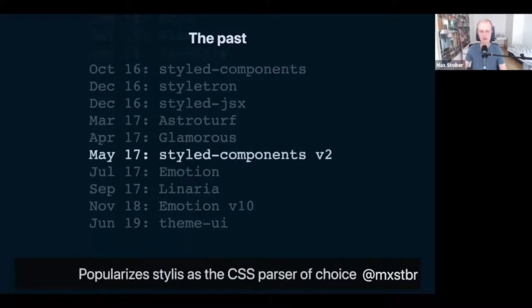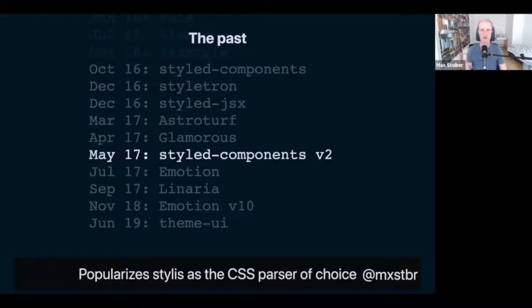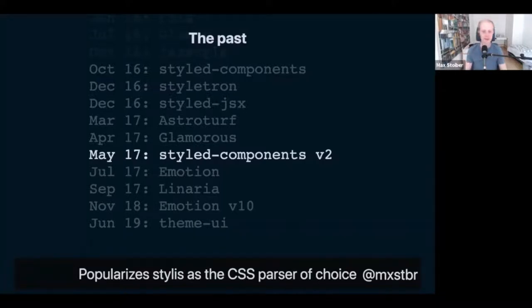In May 2017, Styled Components v2 was notable mainly because we found a random person in Africa called Thay Sultan who wrote a CSS parser in JavaScript called Stylis — super tiny and super fast. Before that, everybody hacked around CSS parsing, but Stylis was a parser tailor-made for CSS-in-JS, much smaller and faster. Stylis practically enabled CSS-in-JS to take off because it made every single library 10 or a hundred times more performant. Nowadays practically all CSS-in-JS libraries use Stylis as their CSS parser.